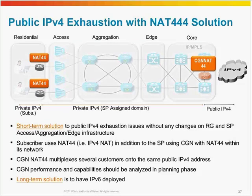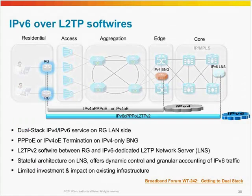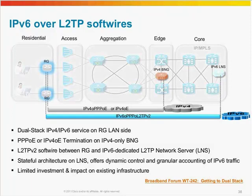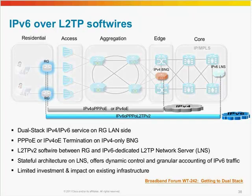The next technique is IPv6 over L2TP softwires. Again, the same diagram — you see the residential access aggregation edge and core network. In the residential gateway, you're still doing the same IPv4 over PPPoE and going towards the IPv4 BNG, which is providing all the layer 3 services, bypassing all the access and aggregation layer network. In this technique, you drop an IPv6 LNS — L2TP Network Server — in your core network. From your dual-stack RG, all your V6 traffic is brought in and terminated on the IPv6 LNS, which sends it all to the IPv6 internet. This is a very limited investment that can provide IPv6 services to your customers by simply dropping this IPv6 LNS in your core network and making your RG a dual-stack device.